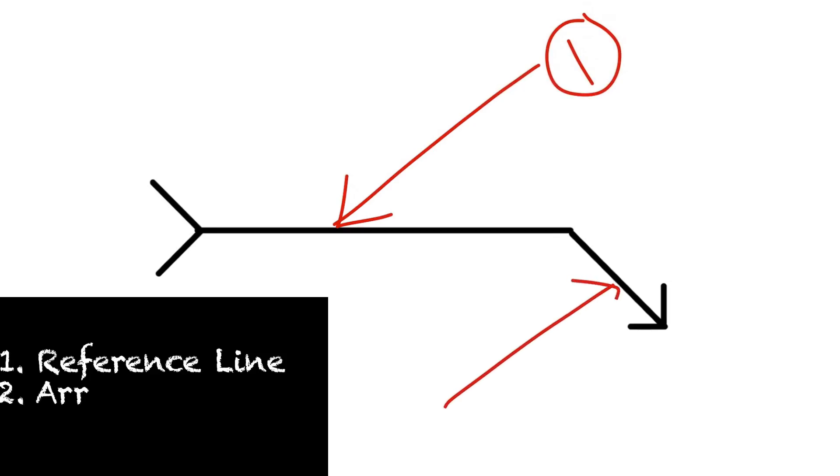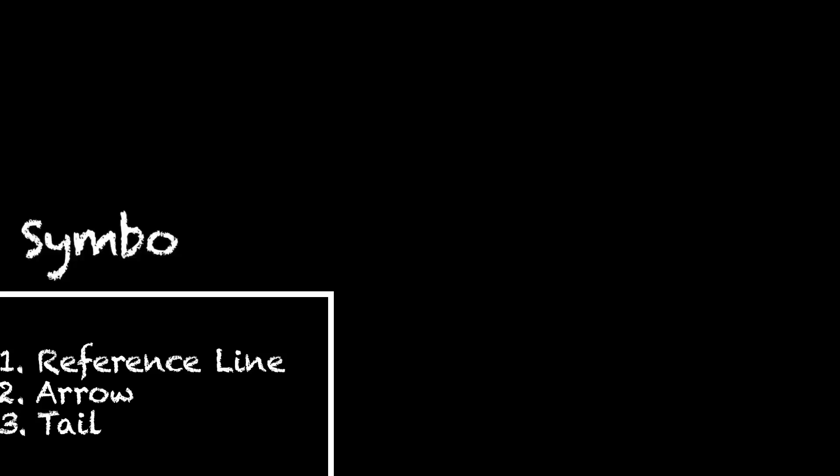The welding symbol has three parts. The first one is the reference line. This is the main part of the symbol and its function is to provide all the information on the weld to be made. The second one is the arrow. This is used to point the reference line to where you need to weld. Third one is the tail. This is used to provide additional information or data, for example, it may contain the welding process.